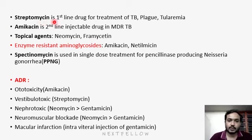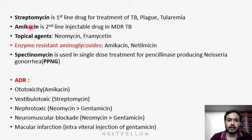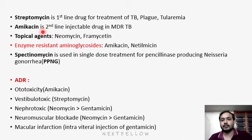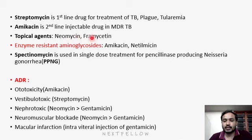Uses of aminoglycosides: streptomycin is a first-line drug for treatment of tuberculosis, plague, and tularemia. Amikacin is a second-line injectable drug in multi-drug resistant TB. For topical infections or superficial infections, neomycin or framycetin are used as topical agents.